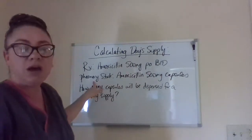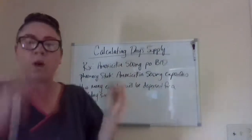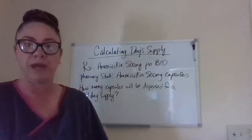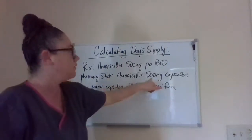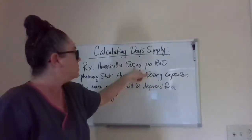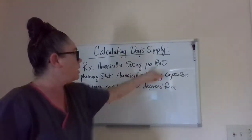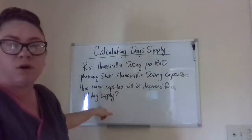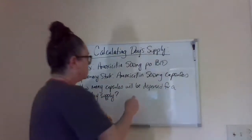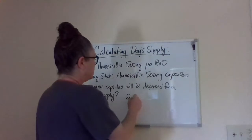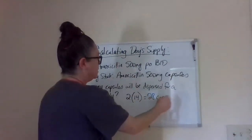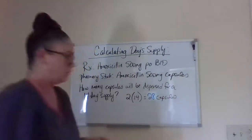Pharmacy stock represents what you have in your store to dispense to your patients. We have amoxicillin 500 milligram capsules — these two match — so it's one capsule twice a day. How many capsules will be dispensed for a 14-day supply? They're taking two capsules a day times 14, so we need to dispense 28 capsules.